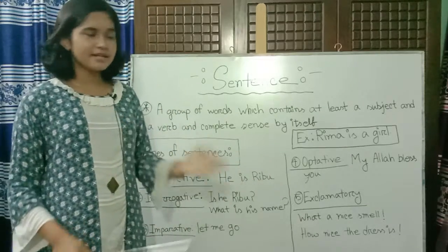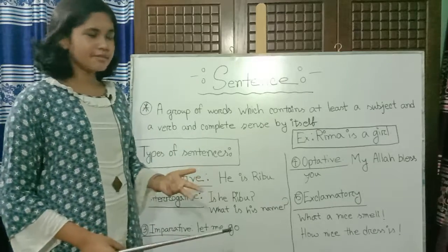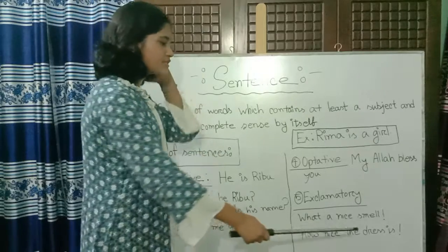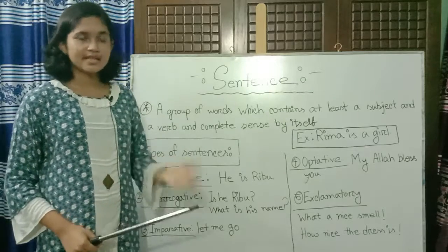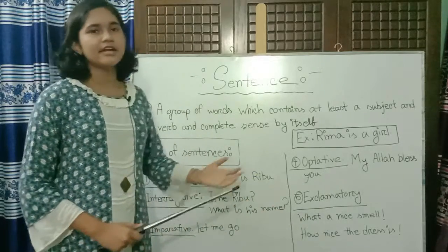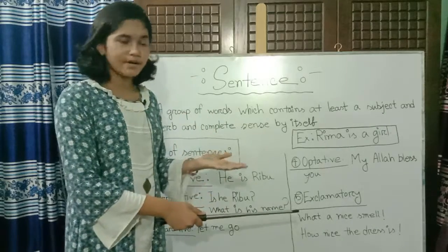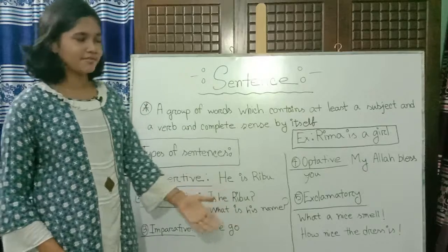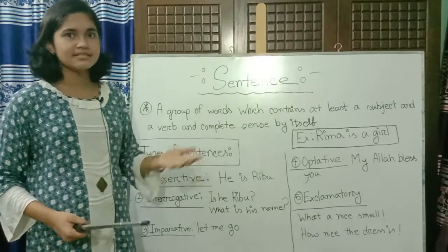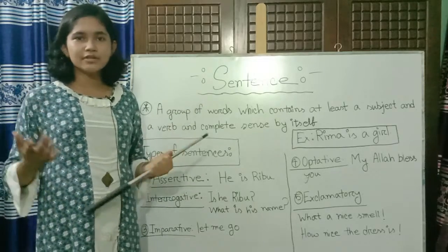The last type is the exclamatory sentence. There are two ways to form it: 'What a nice smell!' and 'How nice the dress is!' We must use an exclamation mark. Optative and exclamatory can look similar, but optative uses a full stop while exclamatory uses an exclamation mark. Words like 'Hurrah,' 'Alas,' and 'Bravo' also form exclamatory sentences.